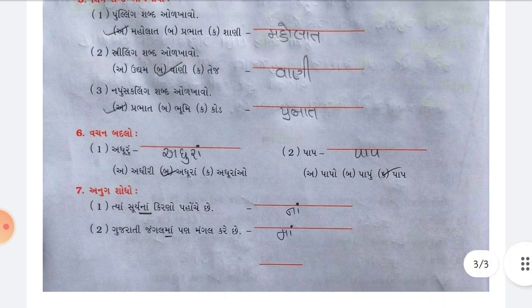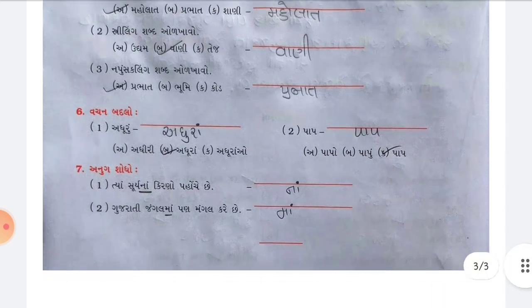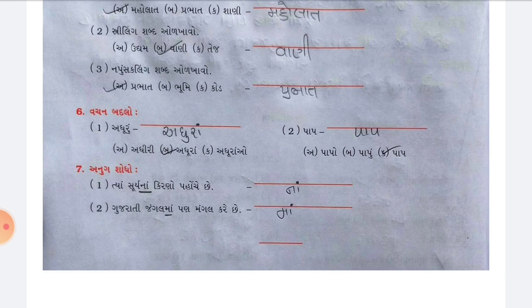Question 7 — Anuk-Shodho (find the word). Number 1: Tiyan Surajna Kiran Pohunche — answer is Na. Number 2: Gujarati Jungle maa Porn Mangal Karay — correct answer is Ma. This was the solution of Chapter 3, Jiyan Jiyan Vase Ek Gujarati.